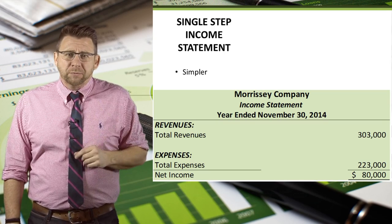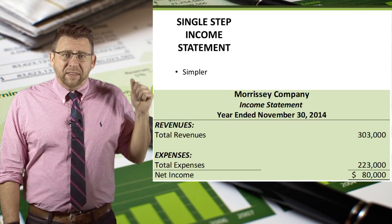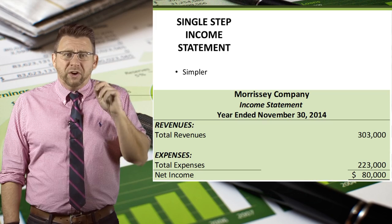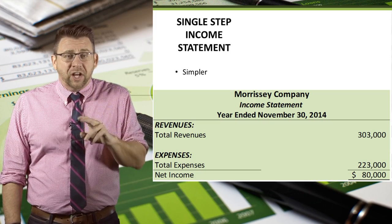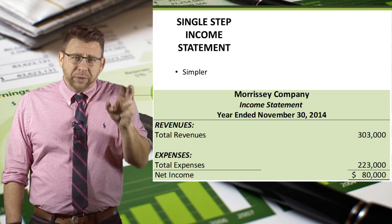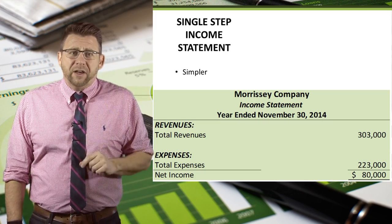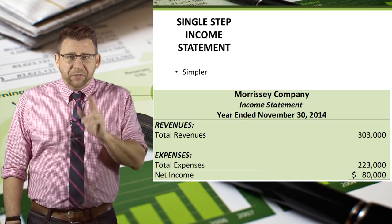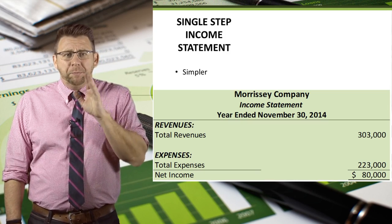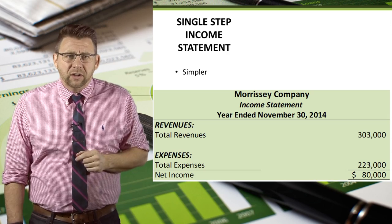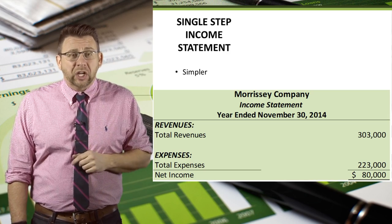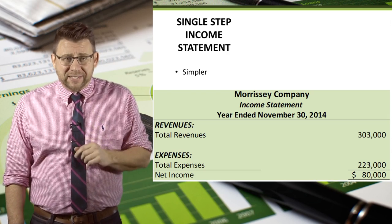But there are some drawbacks. In the example, this firm earned $80,000 of net income on $303,000 of revenue. But the question is, how repeatable is that next year? Let's answer that by looking at the multi-step format.